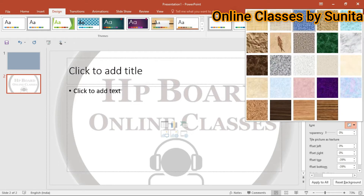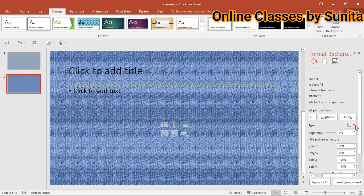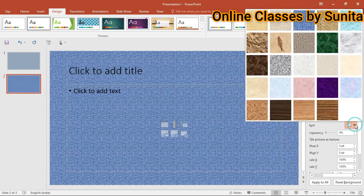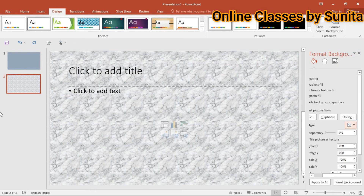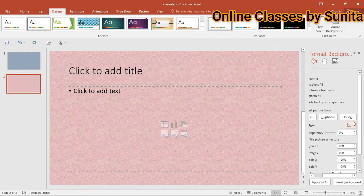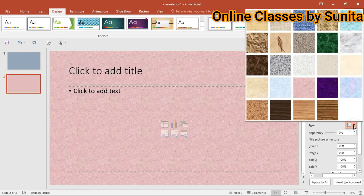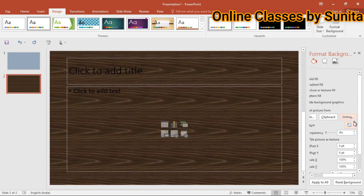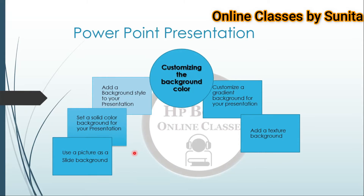यहाँ पर textures हैं — जो भी texture आप use करना चाहते हैं वो use कर सकते हैं। यह simple steps हैं और बहुत easy हैं। रट्टा लगाने की बिल्कुल जरूरत नहीं — simply one by one steps follow करने हैं। Next आता है: customize a gradient background for your presentations।